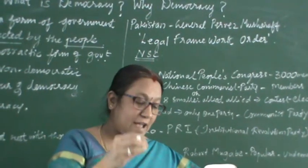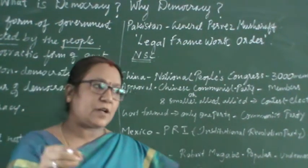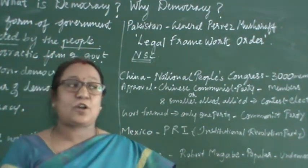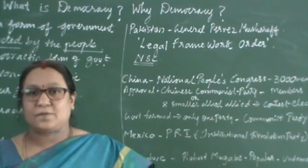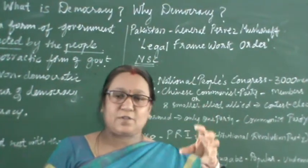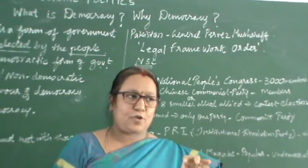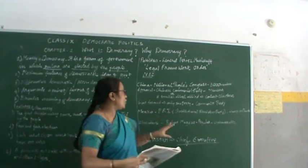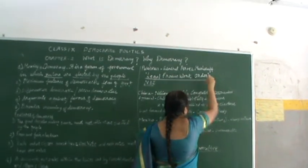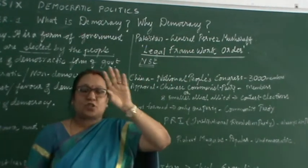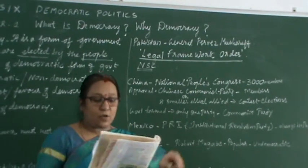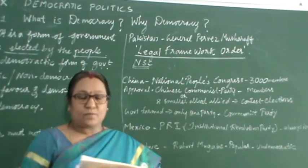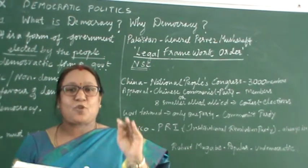These activists and media alleged that through malpractices and fraud, he was granted another five years' extension. When he took over, he issued a Legal Framework Order. According to this order, the constitution was provisionally suspended, he amended the constitution of Pakistan, and the President was given the power to dismiss the national and provincial assemblies.